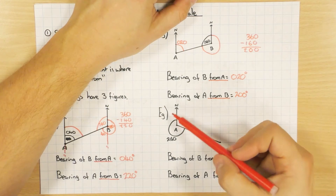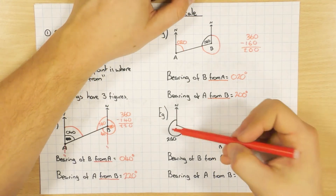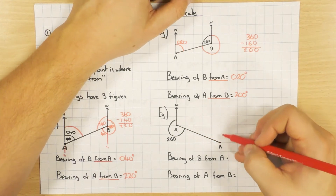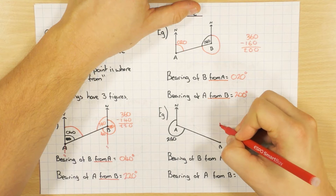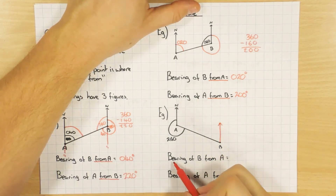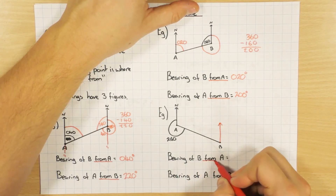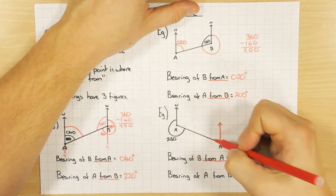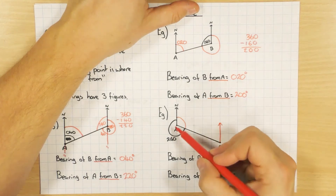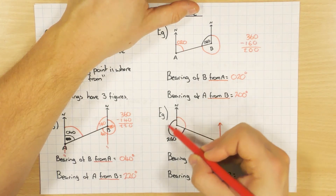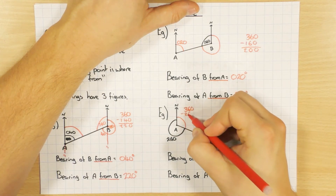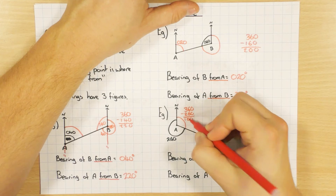Next example: point A and point B, with the given angle as 260 degrees. I add the missing north line. For the bearing of B from A — from A going to B, north clockwise — I know all the way round is 360, so 360 minus 260 equals 100 degrees.